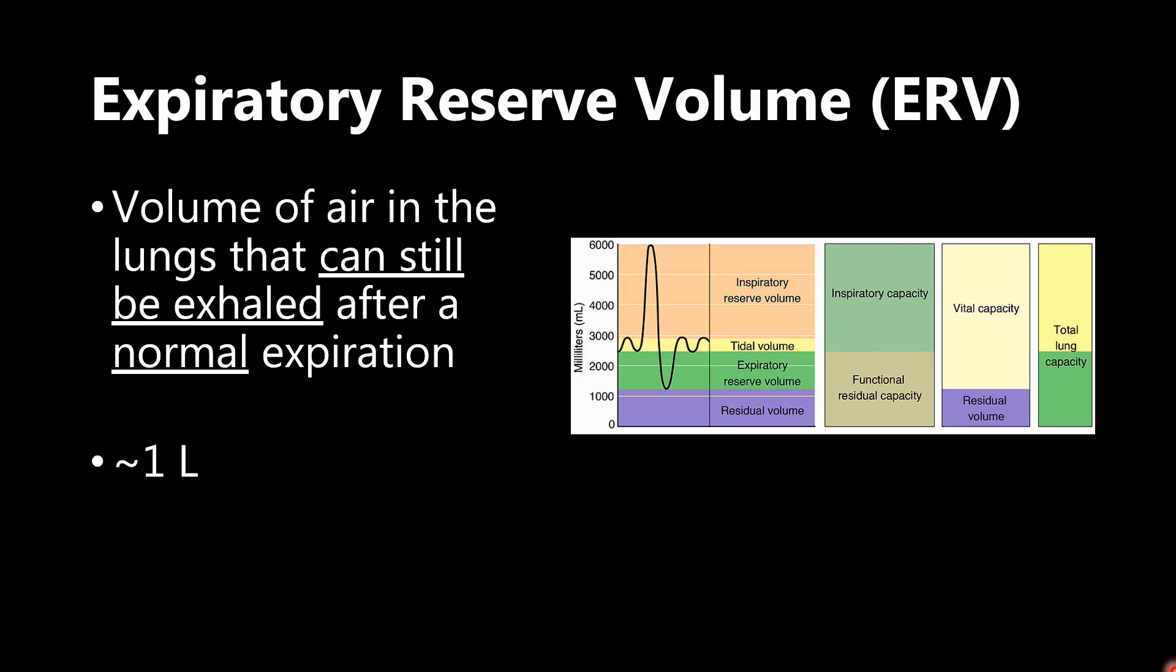The next one that we have here is expiratory reserve volume, and we have that right over here. What this is essentially is the volume of air in the lungs that can still be exhaled after a normal expiration. So we see here, if we go back to tidal volume real quick, we have a normal inspiration, then we have a normal expiration. The volume of air that can still be pushed out of the lungs after that normal expiration is our expiratory reserve volume.